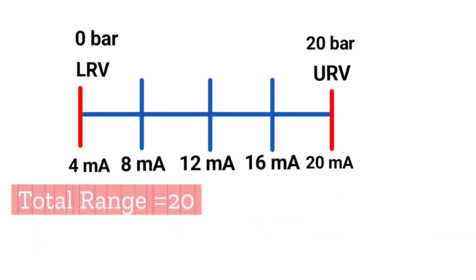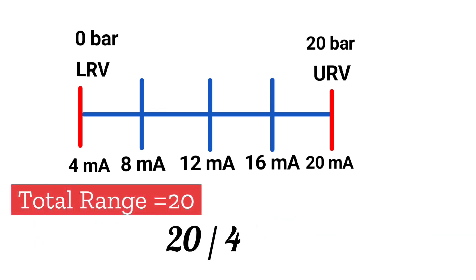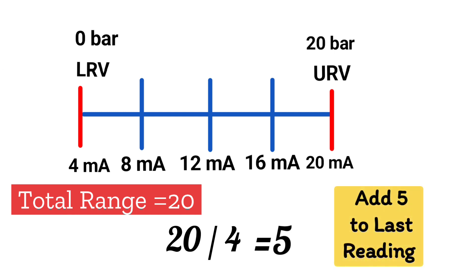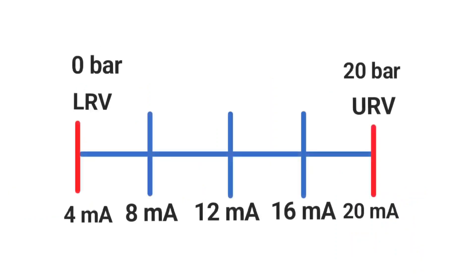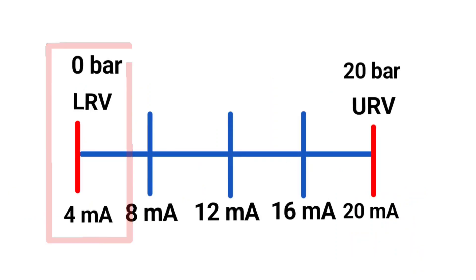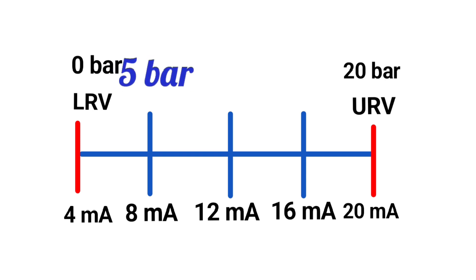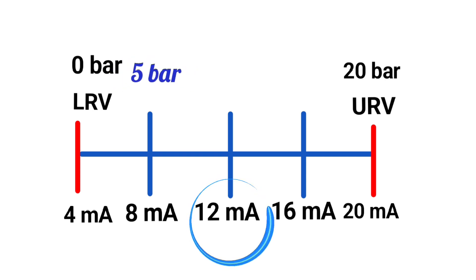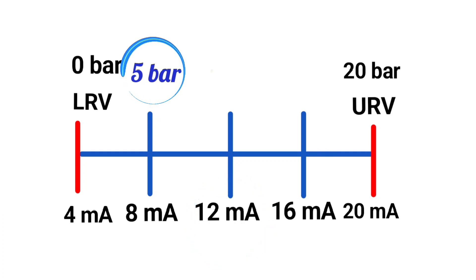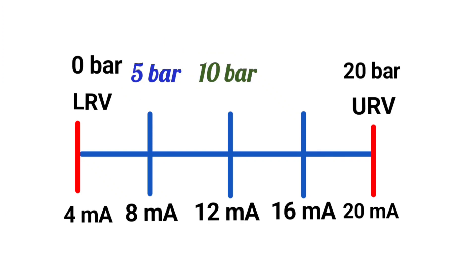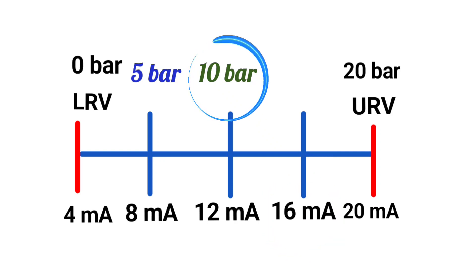Total range 20, divided by 4, gives 5. This value of 5 will be added to the previous reading. At 4 milliampere it was 0 bar, so it will be 5 bar at 8 milliampere. To calculate at 12 milliampere, add 5 again to the previous reading — this gives 10 bar. Similarly, to calculate 16 milliampere, add 5 to the previous reading — this gives 15 bar.